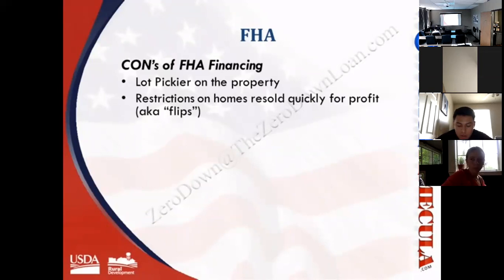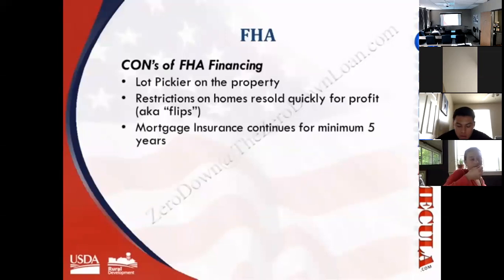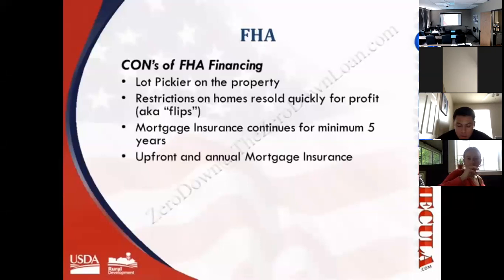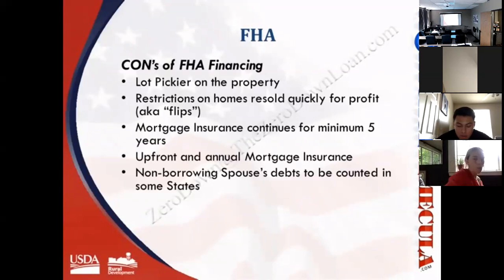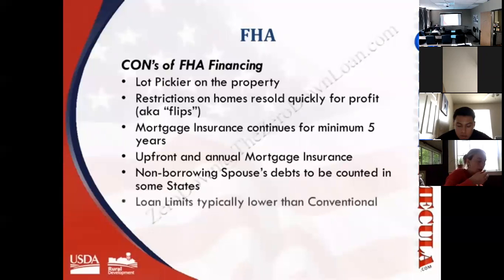Some negatives of FHA: the appraisal can be stricter on property condition. There are restrictions on buying homes that will be quickly resold for profit — specifically where the seller has not owned the property for 90 days. Mortgage insurance on FHA loans continues for a minimum of five years, with both an upfront and annual mortgage insurance premium. In the nine community property states — Arizona, California, Nevada, Idaho, Louisiana, New Mexico, Texas, Washington, and Wisconsin — the spouse's debts must be counted, which can lower the amount the individual qualifies for.